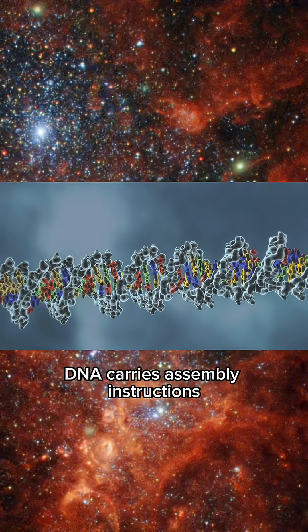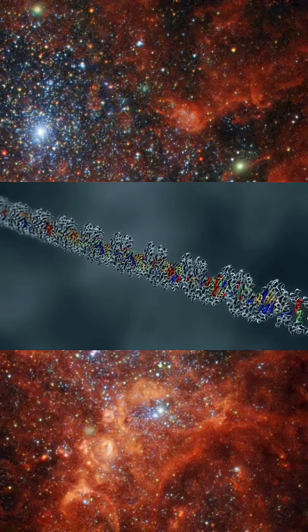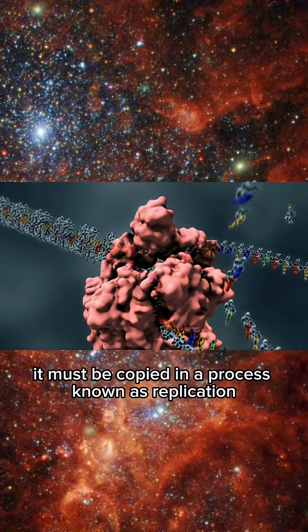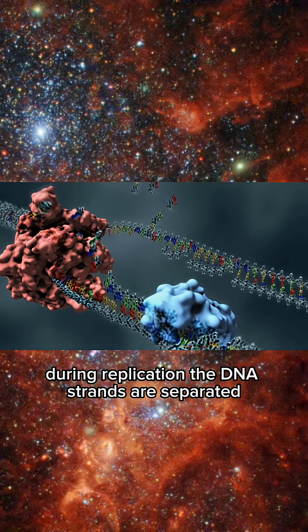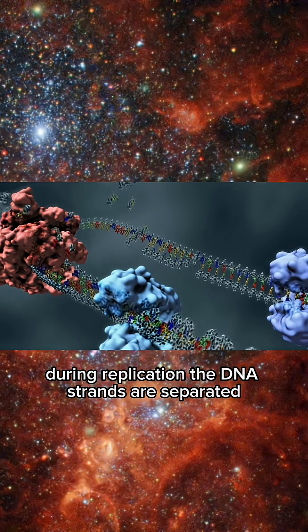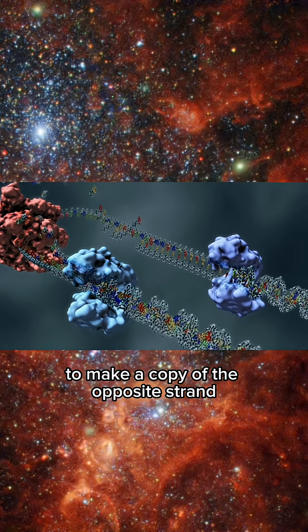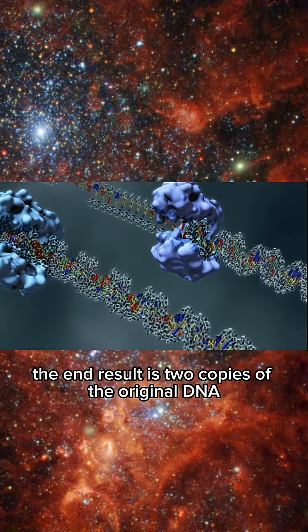DNA carries assembly instructions required for your body to generate new cells. But for DNA to do its work, it must be copied in a process known as replication. During replication, the DNA strands are separated, and protein machines use each strand to make a copy of the opposite strand. The end result is two copies of the original DNA.